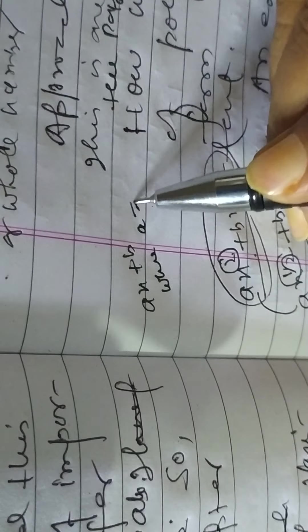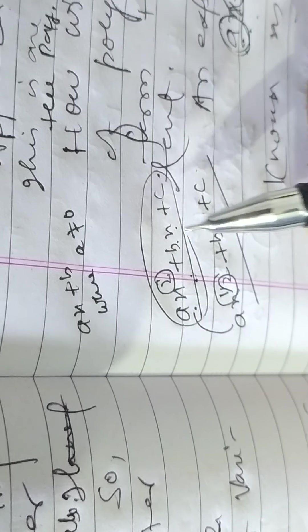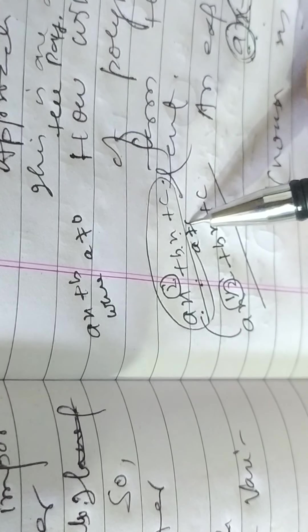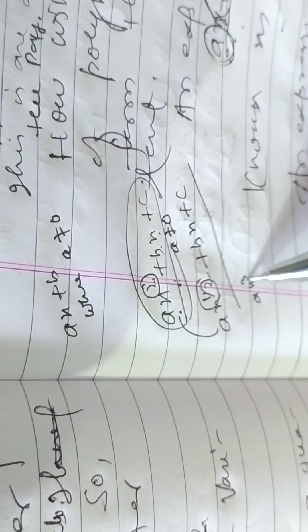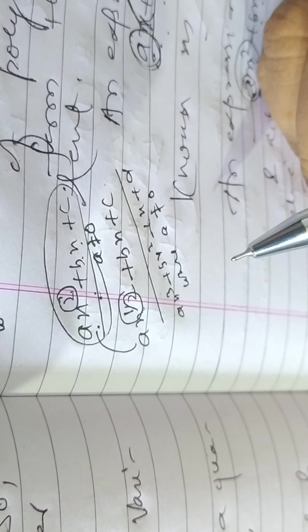You know that an expression of the form AX plus B, where A is not equal to zero, is known as linear polynomial. An expression of the form AX² plus BX plus C, where A is not equal to zero, is quadratic polynomial. An expression of the form AX³ plus BX² plus CX plus D, where A is not equal to zero, is cubic polynomial.